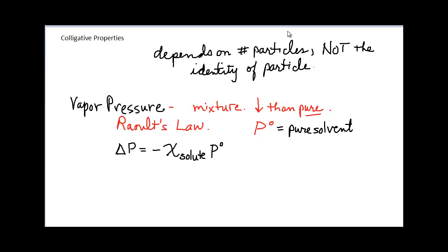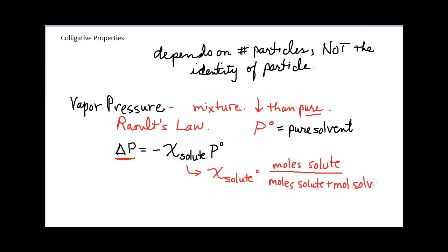That's why we have the negative sign — adding something to a pure solvent always lowers the vapor pressure. If you come across this equation in a textbook without a negative sign, they assume you understand the vapor pressure is being lowered. Note that this gives the change in vapor pressure, not the absolute vapor pressure. The mole fraction of the solute is calculated as moles of solute divided by total moles (solute plus solvent). You would also need to look up the vapor pressure of the pure solvent in a table.